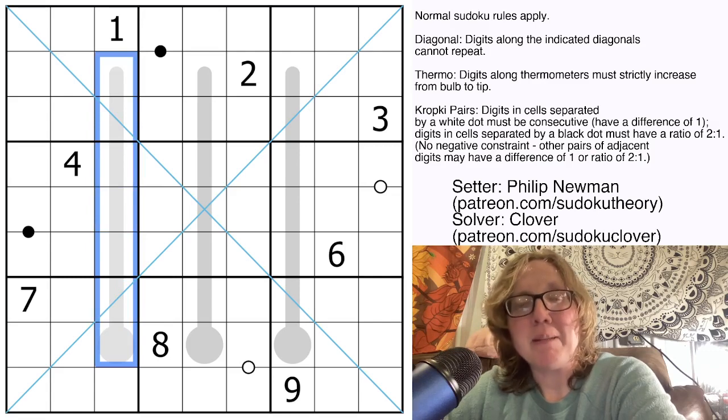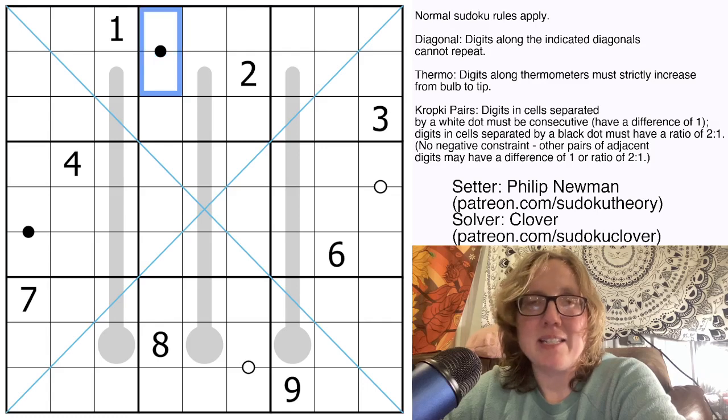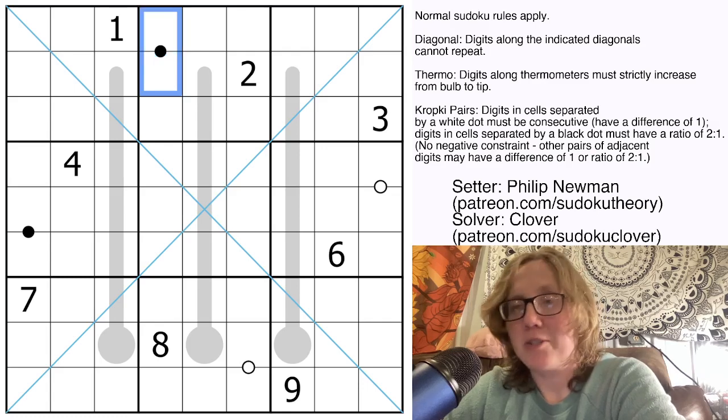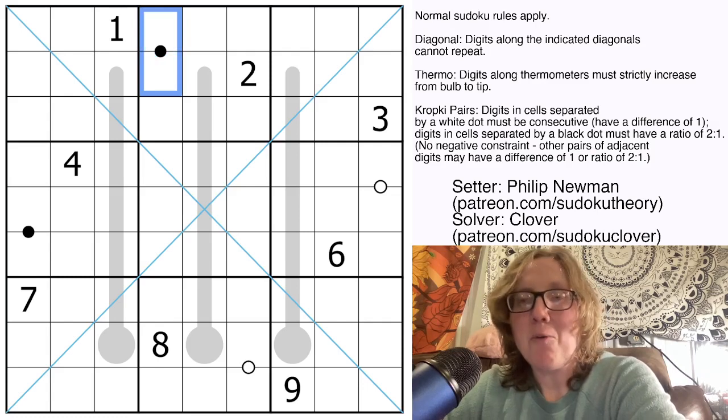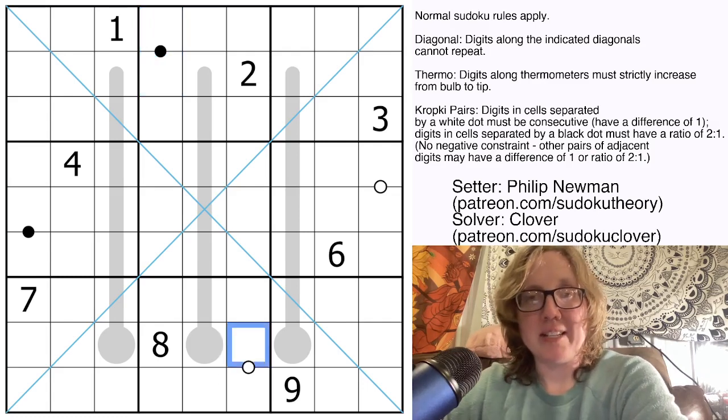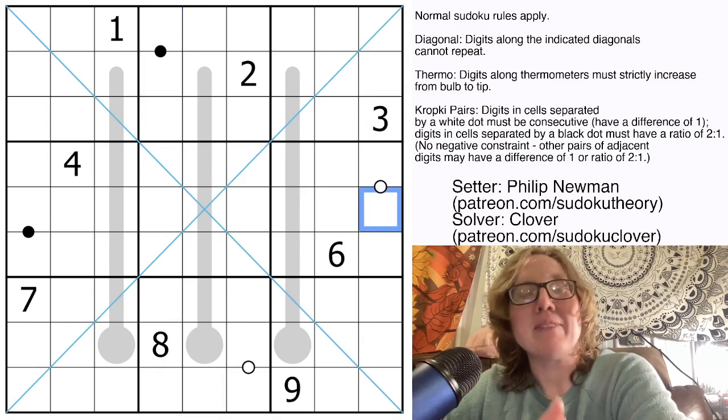And then we also have Kropke pairs. That's these dots in the grid. Black dots indicate that the digits on either side have to be in a 1 to 2 ratio. In other words, one of them has to be twice as large as the other. White dots indicate that the digits on either side have to be consecutive, such as 2 and 3, or 7 and 8.